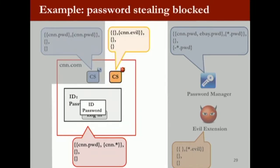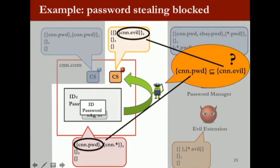Now I'll show how, with the right policy, we actually stop the attack. The evil extension's content script is on the page and tries to read the password from the DOM. The information would flow from the ID and password fields to the evil extension's content script. We do the same check: is the current level of the password field a subset of the evil content script's ceiling? This check fails because the evil extension is not allowed to learn CN.password. Therefore the reference monitor stops this send from happening. That's how we allow the evil extension's content script to operate on other parts of the DOM, but not on the password part — this is fine-grained information flow control within the context of the web page.